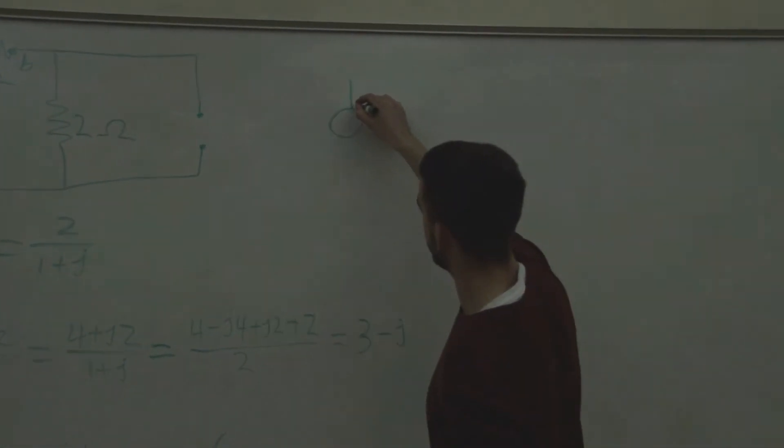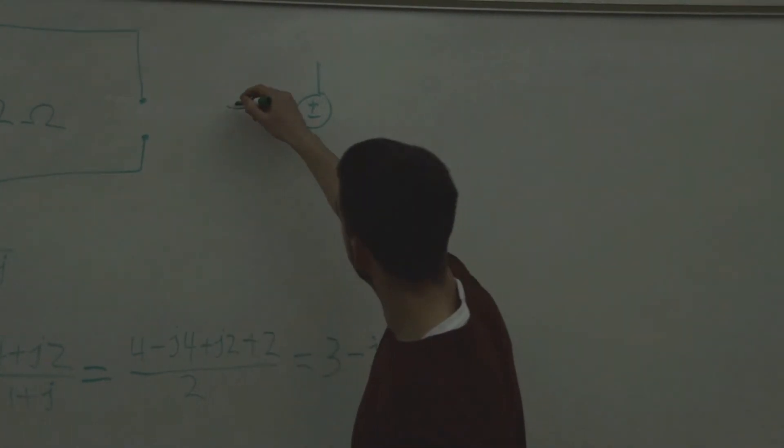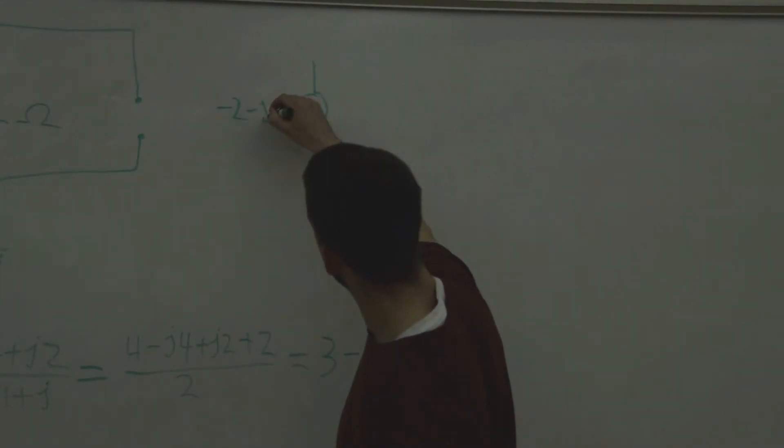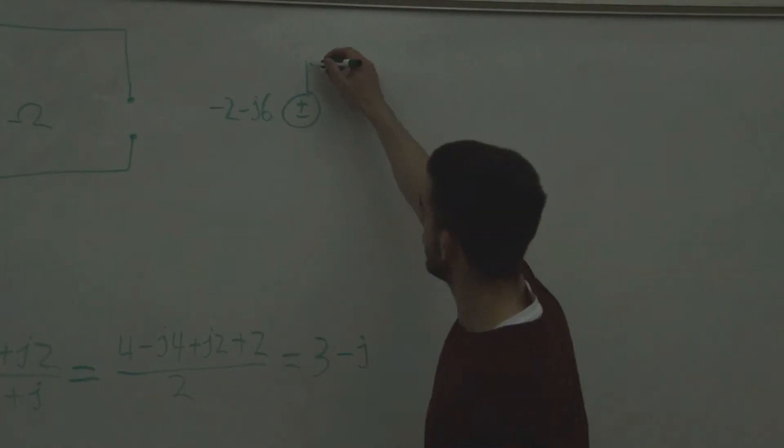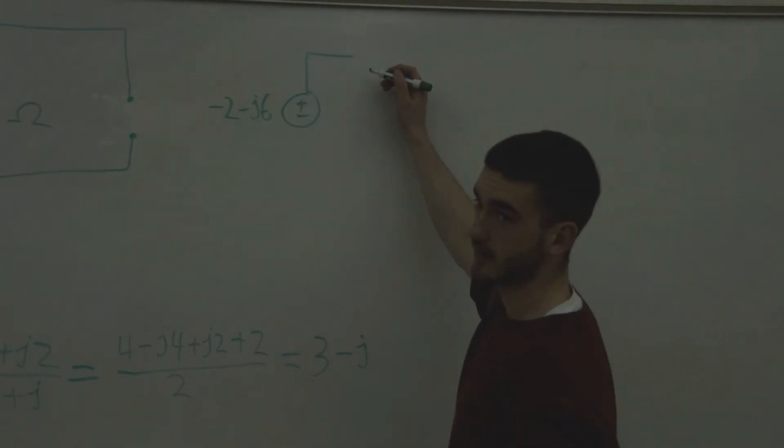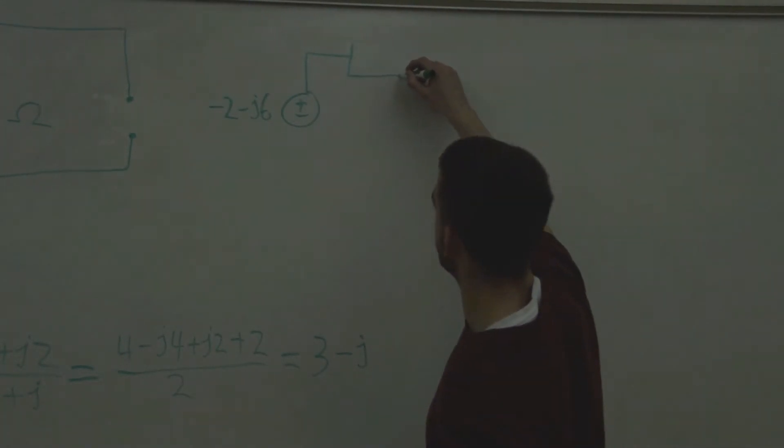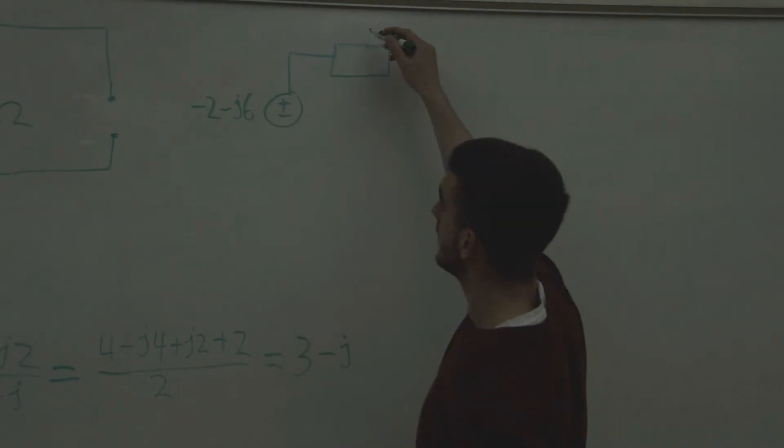So we have our voltage source, and that's VOC, negative 2 minus J6. We come up here, we have our Thevenin impedance, so that's going to be 3 minus J. And then down here we have our load, which is 4 ohms. And we're trying to find I-O.